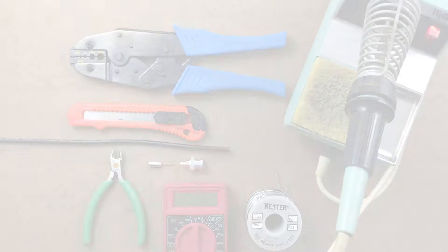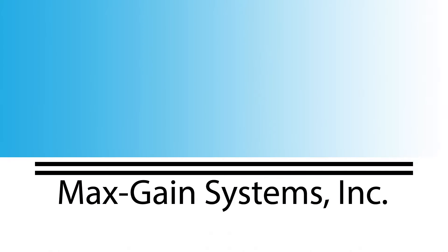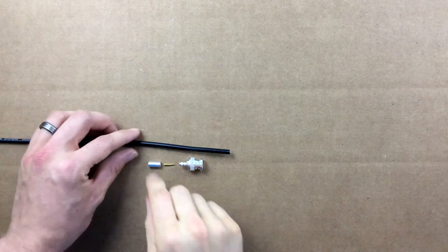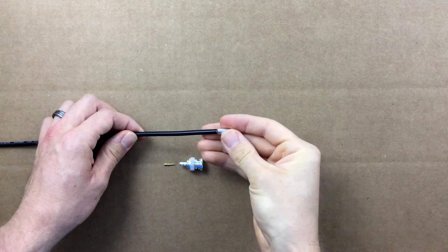Let's get started with our installation. We start out by sliding the connector ferrule onto the coax.